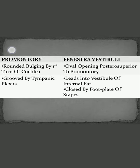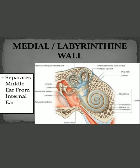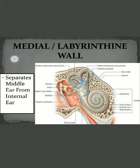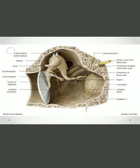Another structure is the fenestra vestibuli, also known as the oval window. It is an opening that lies posterior-superior to the promontory. Fenestra is a small opening in a bone, and it is called vestibuli because it lies opposite to and leads into the vestibule of the inner ear. In this figure, posterior-superior to the promontory there is the oval window, and this window is closed by the footplate of the stapes.